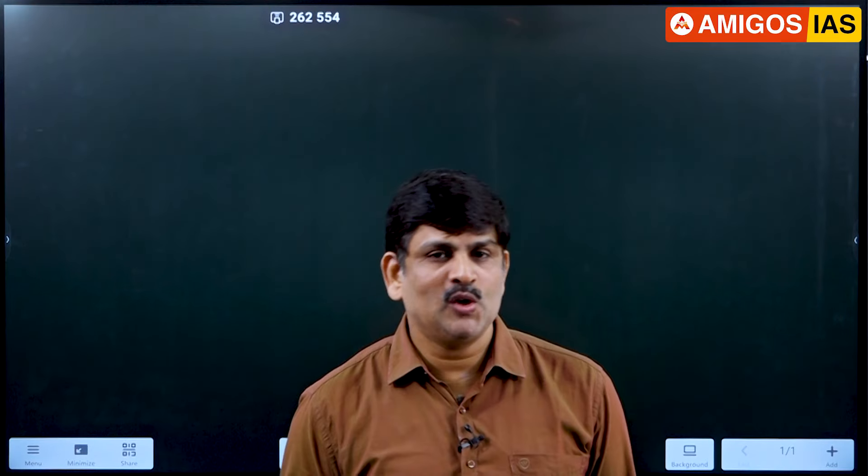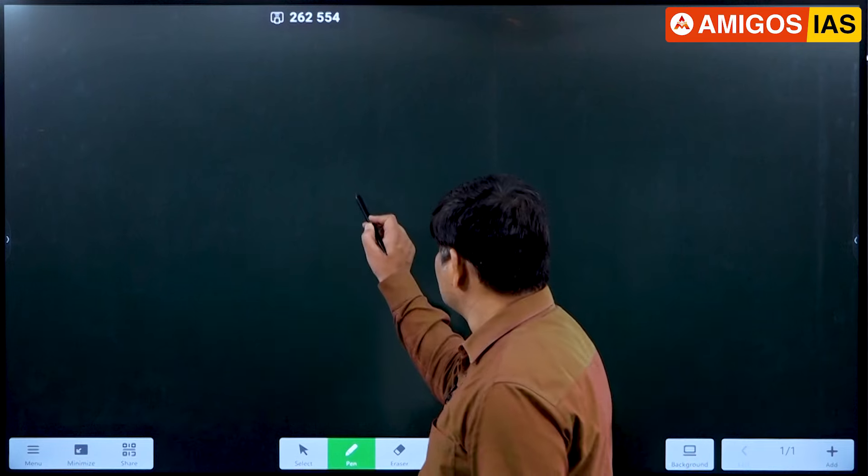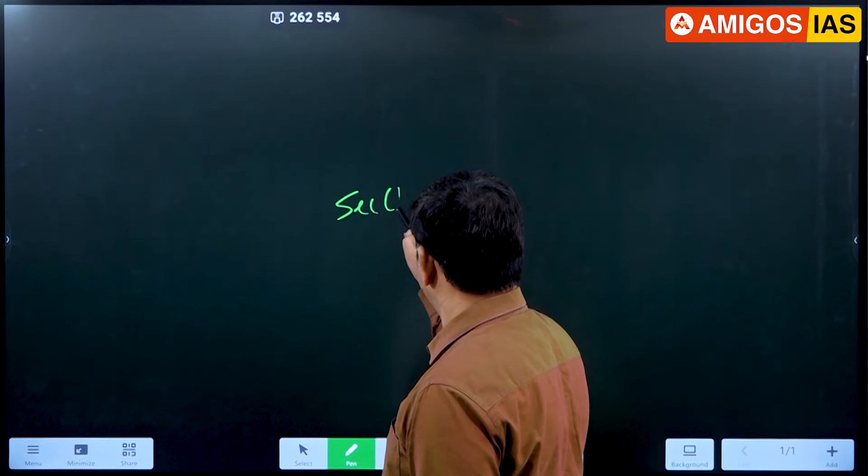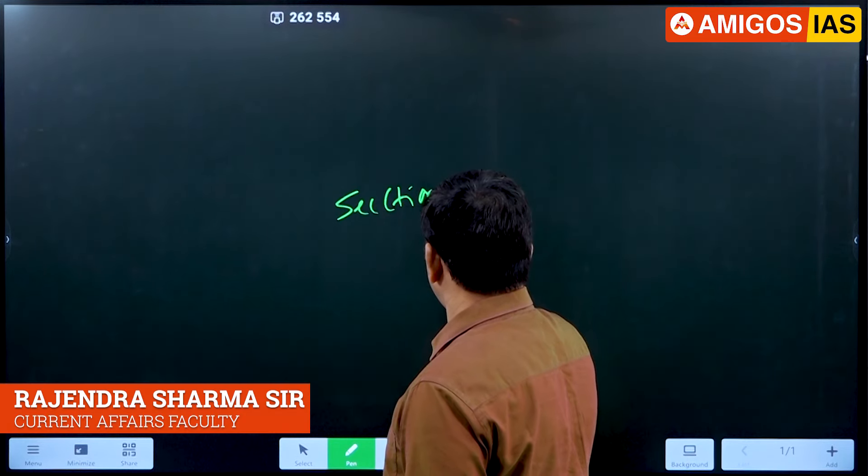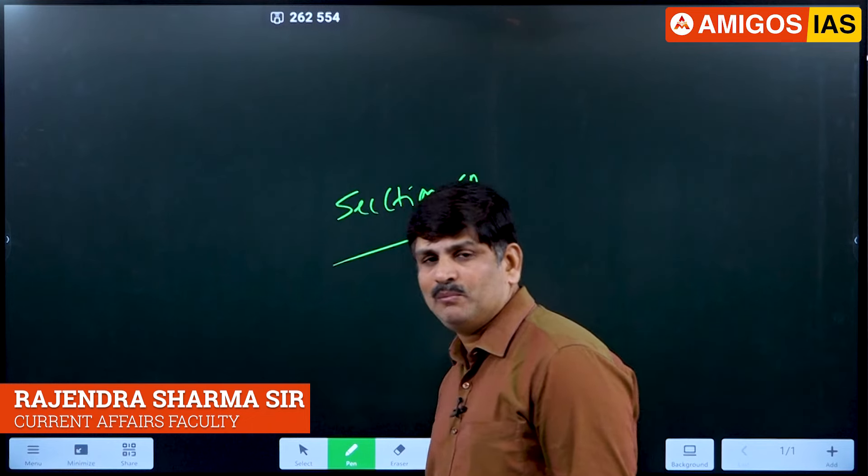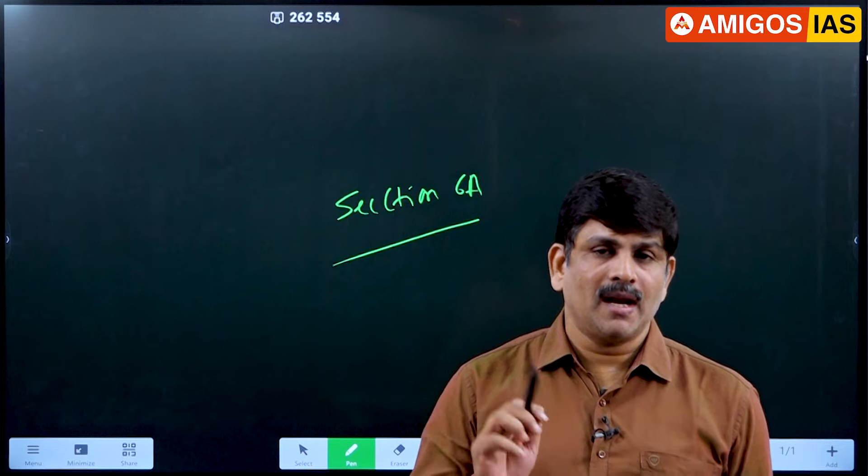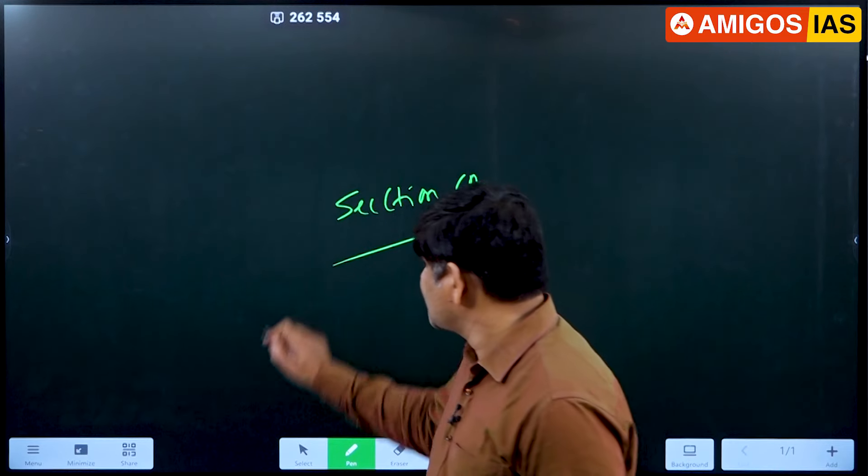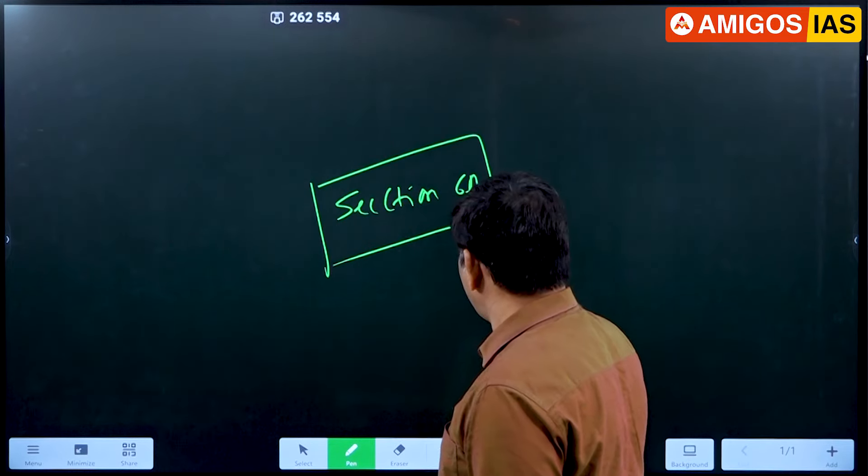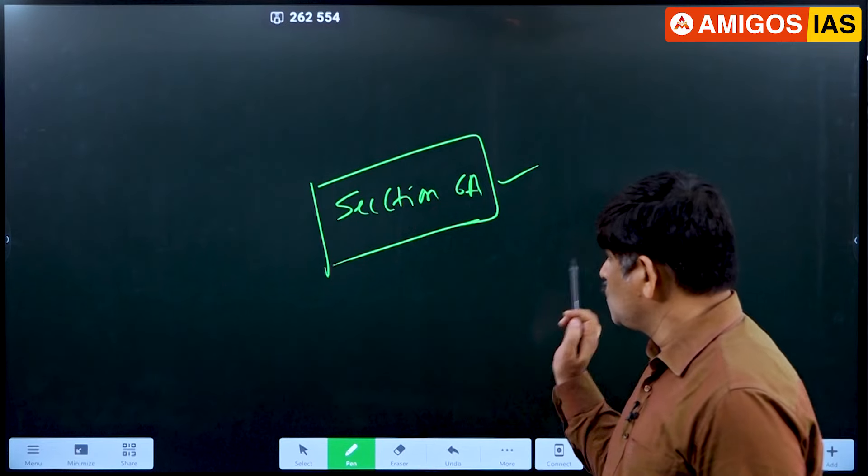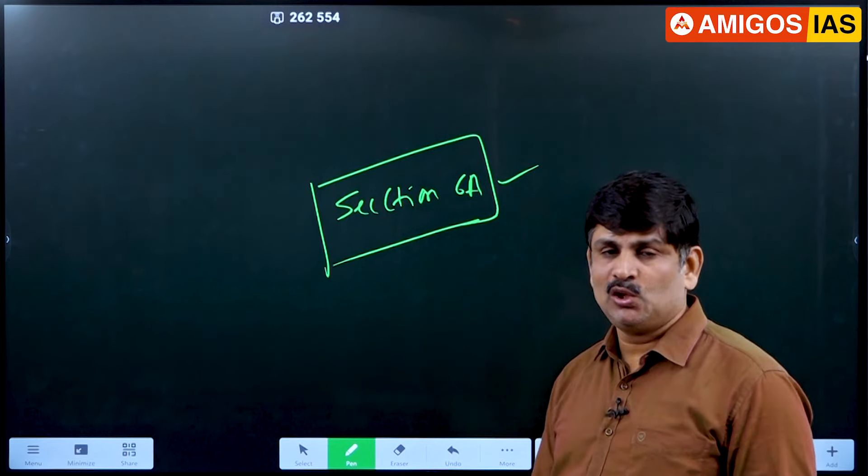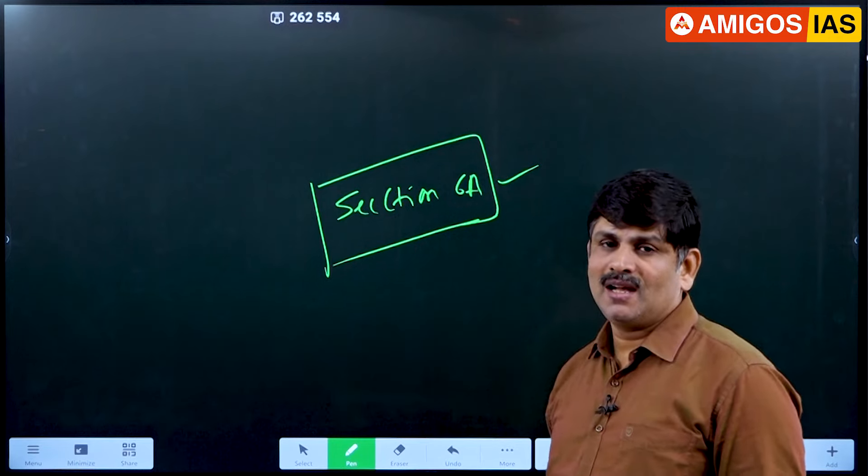Welcome to Amigos IAS. Section 6A. Bharata Nanjangam - Indian Citizenship related matters. Section 6A. This section is called the Bharata Nanjangam.